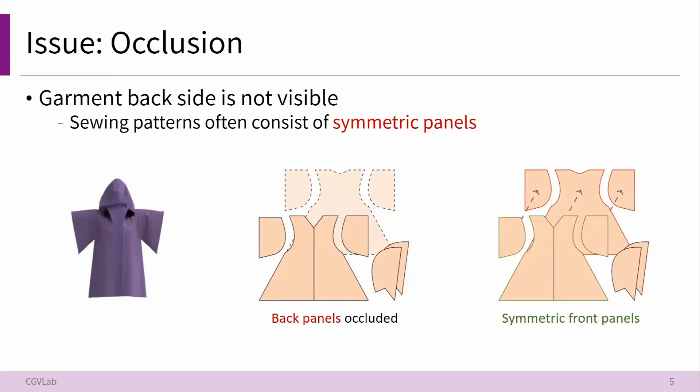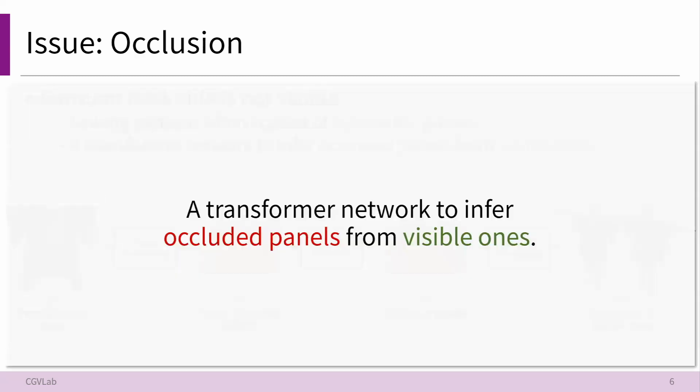By adopting such a sewing pattern representation, the overall garment shape is disentangled from physical deformations and allows for describing a wide range of garment types without limitations. However, working with 2D images presents a significant challenge in handling occlusion, since nearly half of the garment is not visible in the projected 2D space. To tackle this challenge, we leverage the key observation that garment sewing patterns often consist of symmetric panels and exhibit strong correlations between panel shapes.